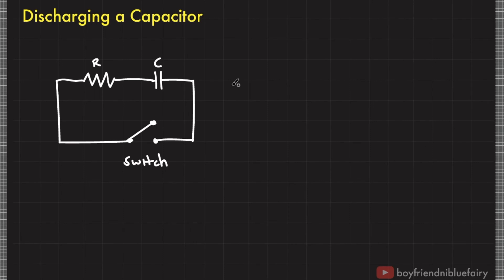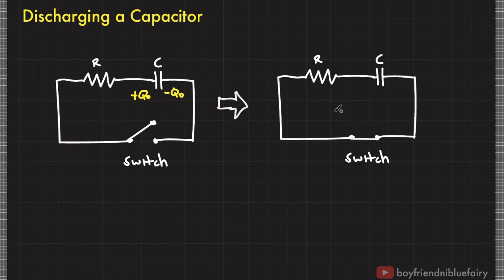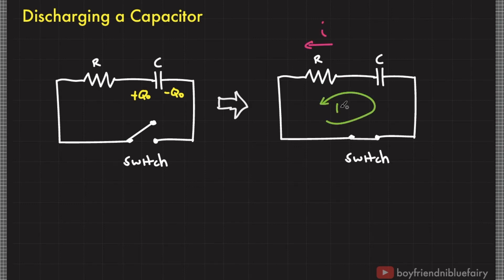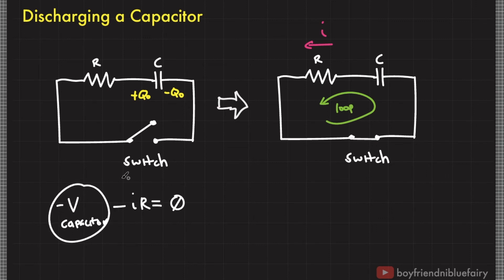Now imagine we have a capacitor with an initial charge of Q sub 0. In this diagram, the capacitor has a charge of Q sub 0. When the switch is closed, since there's no EMF source in the circuit, the capacitor will release its charge and begin discharging. Assume that the current flows this way and the loop goes in this direction. Using this loop, we have this expression. The capacitor is losing its stored energy in the process, which is why we attach a negative sign here.